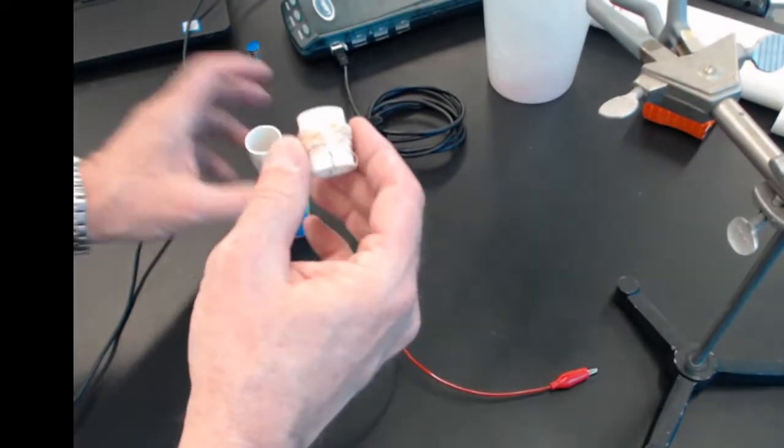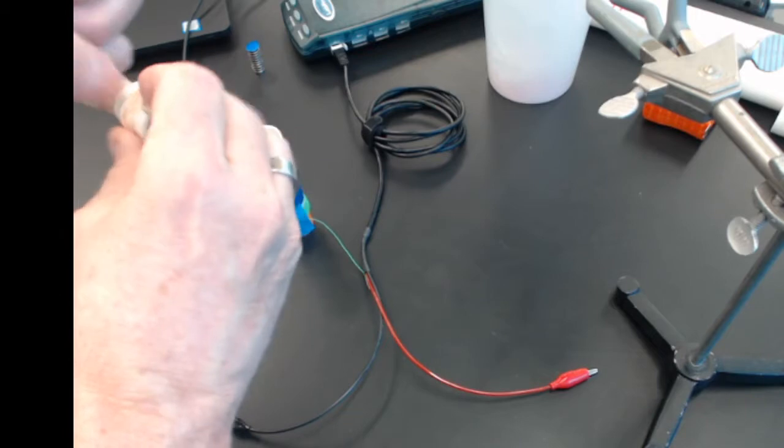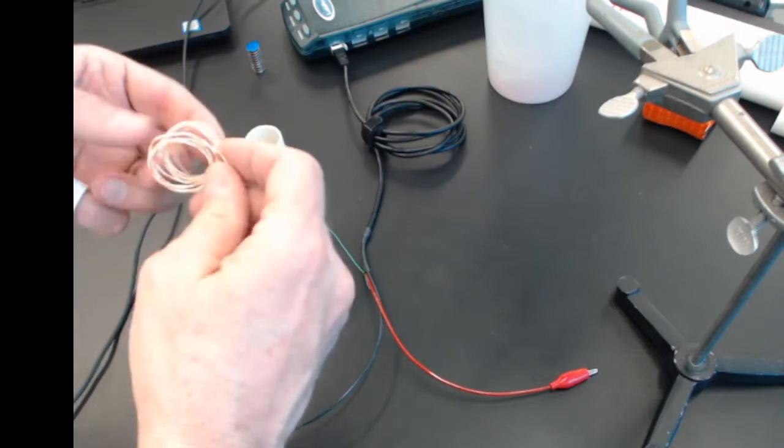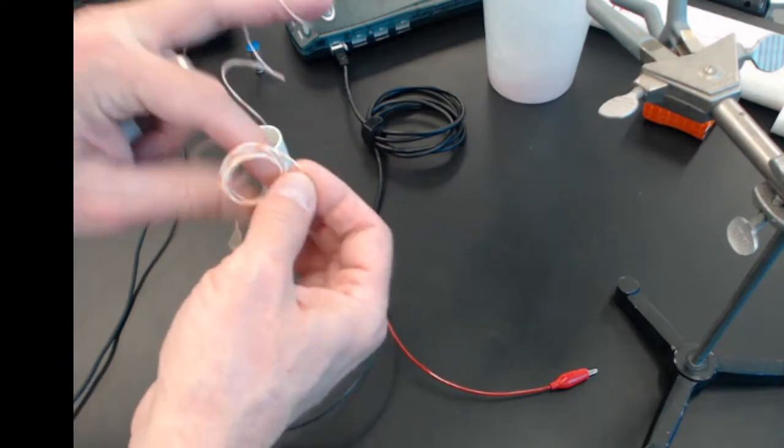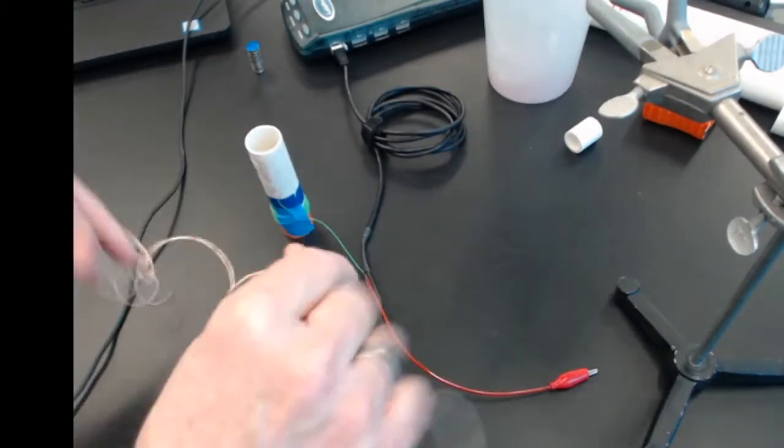I'll take an extra wire from this other spool, uncoil it, and add it onto the wire. I want to make sure that I get a good electrical connection. Put the spool there,